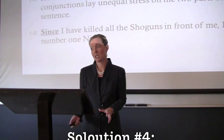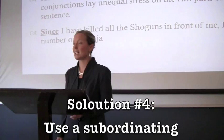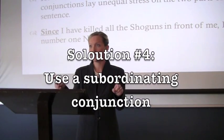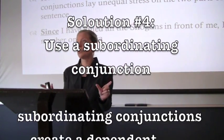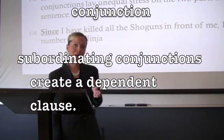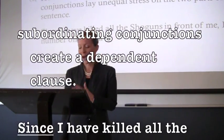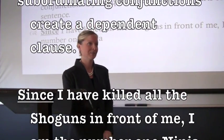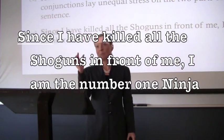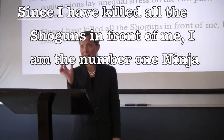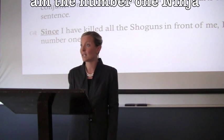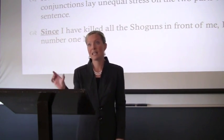The fourth solution is using a subordinating conjunction. Rather than a coordinating conjunction, which says these two things are related equally, you say one thing is related to the other — you create a dependent clause and an independent clause. So: 'Since I have killed all the shoguns in front of me, comma, I am the number one ninja.' The dependent clause starts with 'since,' a dependent marker word. That clause no longer stands on its own; it requires the independent clause to give it meaning.